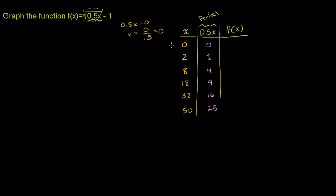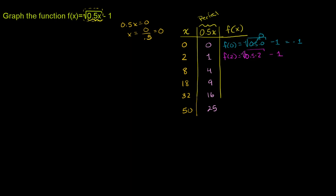These are the x values we'll pick, chosen so the function definition comes out cleanly. Now let's figure out f of x at those values. f of 0 equals the square root of 0.5 times 0 minus 1 — that part is just 0, so 0 minus 1 equals negative 1. f of 2 equals the square root of 0.5 times 2 minus 1 — that part equals 1, so 1 minus 1 equals 0.